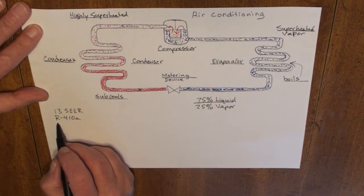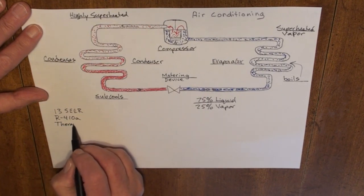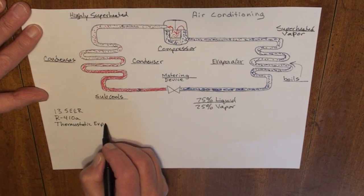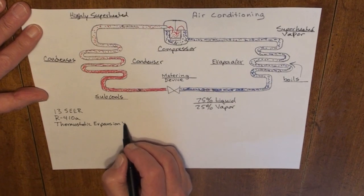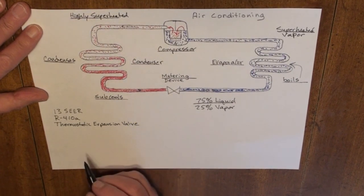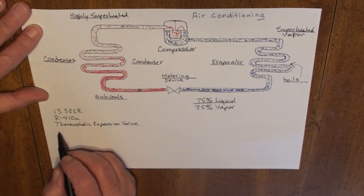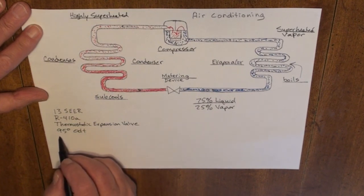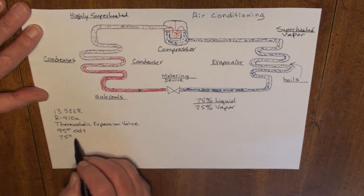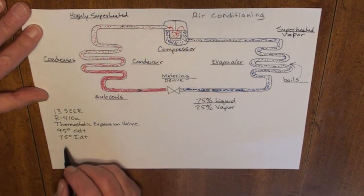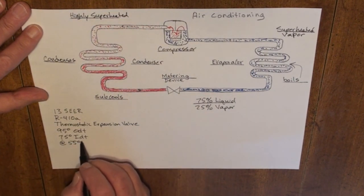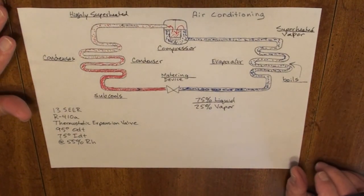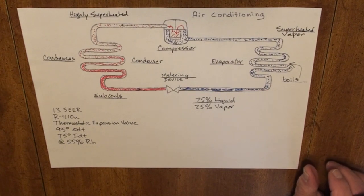We're also going to have a thermostatic expansion valve. We're going to have design conditions of a 95 degree outdoor temperature. We're going to have a design indoor temperature of 75 degrees indoor temperature at 55% relative humidity. And let's get started with the refrigeration cycle.